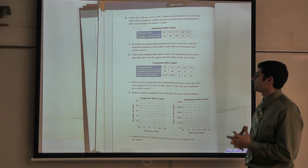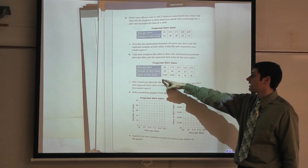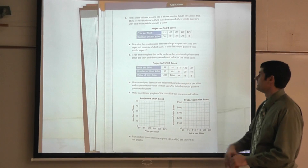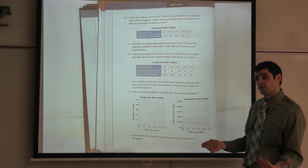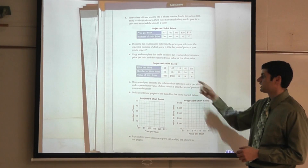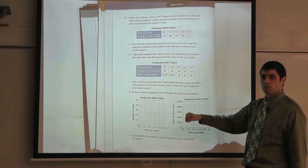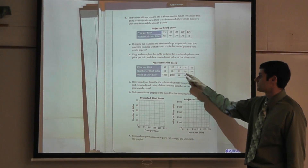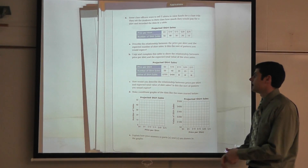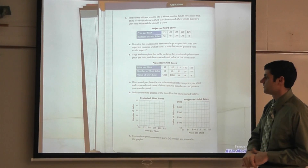Analyzing this chart, if I sell shirts for five bucks I bring in $250, and if I sell at twenty-five dollars to only ten people I also bring in $250. Forty shirts at ten dollars gives $400, and twenty shirts at twenty dollars also gives $400 — they're equal. Fifteen dollars with thirty people gives $450. So we can look at this information in a new way.